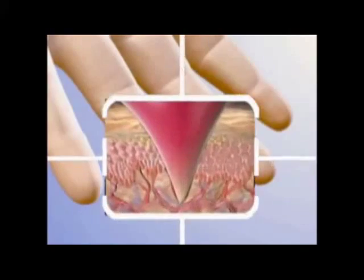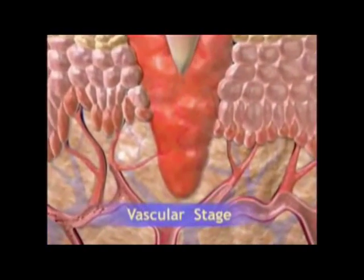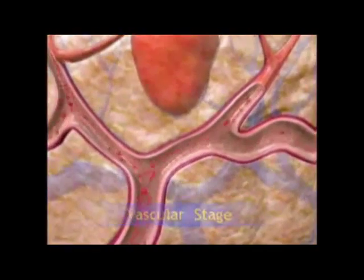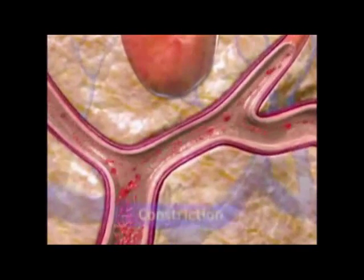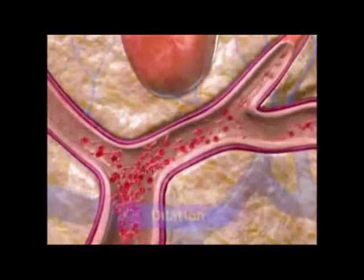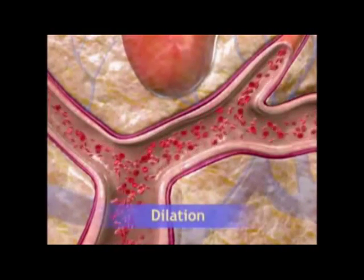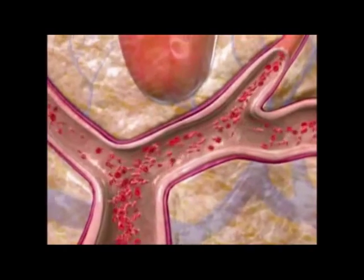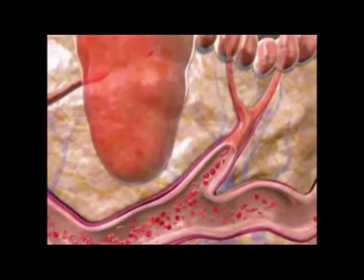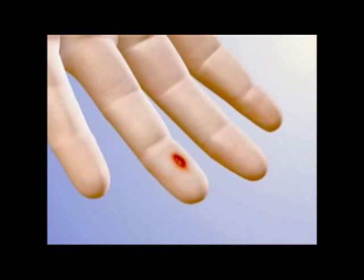Acute inflammation occurs in two overlapping stages: vascular and cellular. In the vascular stage, arterioles and venules near the site of injury constrict briefly, then dilate. Dilation promotes congestion, while an accompanying increase in capillary permeability leads to the movement of fluid into the affected tissue, resulting in the five classic signs of inflammation.